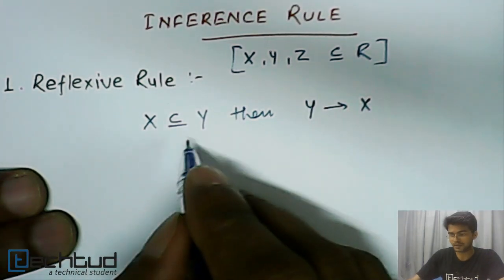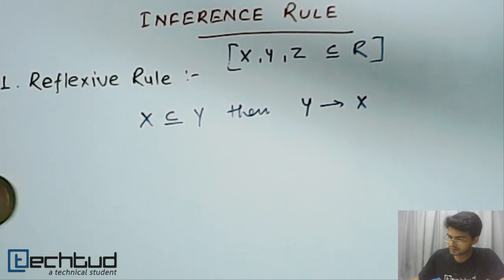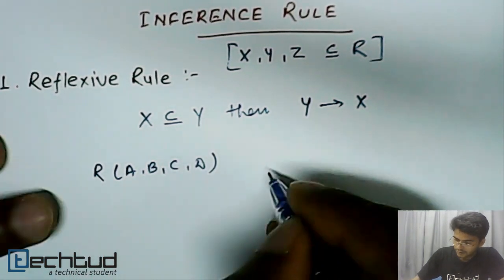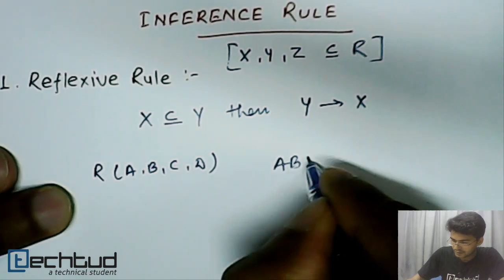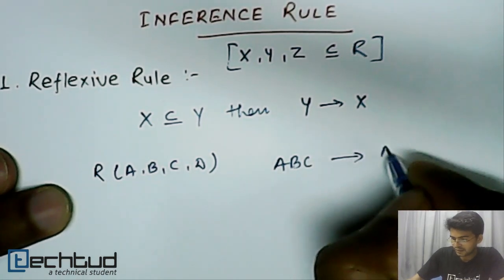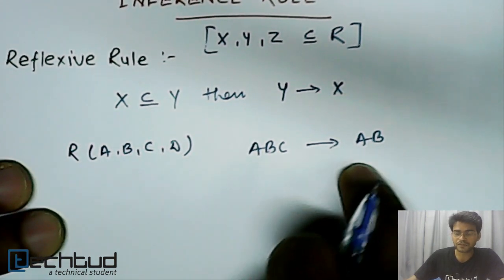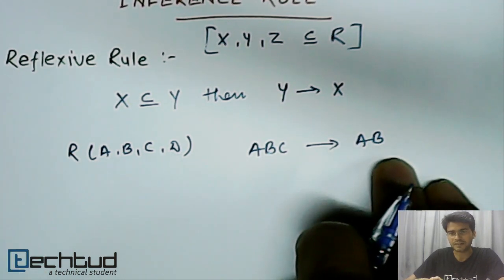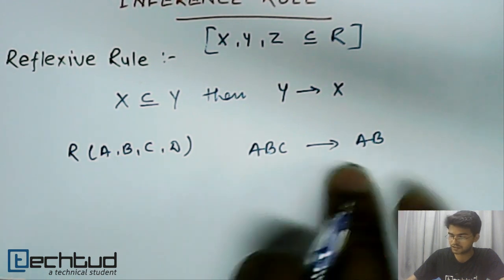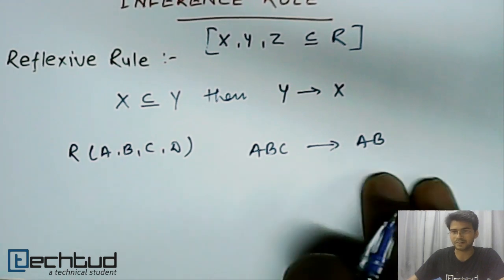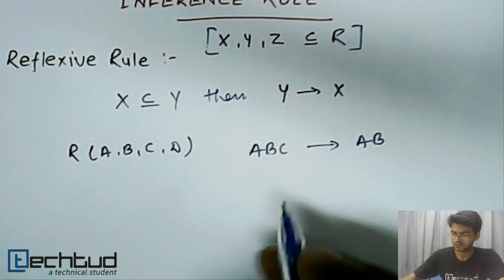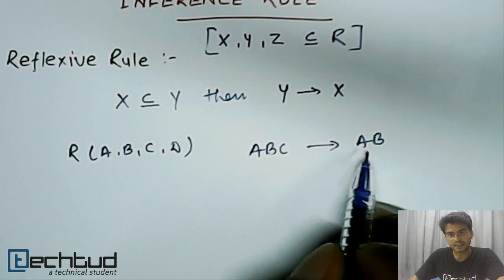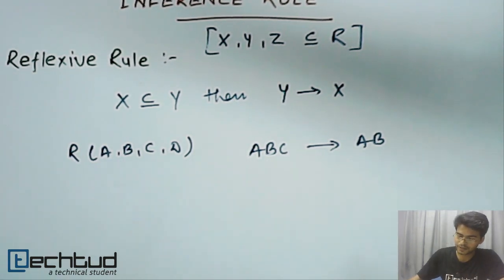If x is a proper subset of y, then y can always determine x. For example, for a relation abcd, abc can determine ab. This is quite obvious — ab is a proper subset of abc. So if abc is already known, that means we can determine ab. Using abc, we can determine ab. That is what we call the reflexive rule: a set can always determine its proper subset.